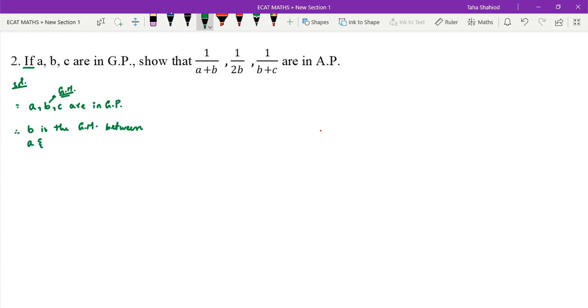For A and C, the GM formula is GM equals root AB. We will use positive. Squaring on both sides, B squared equals AC.